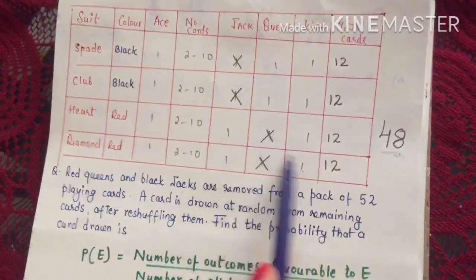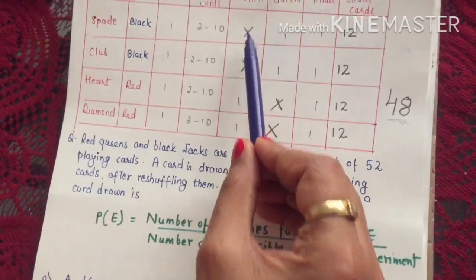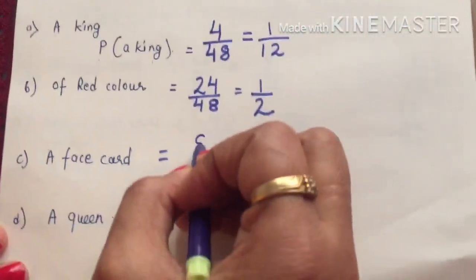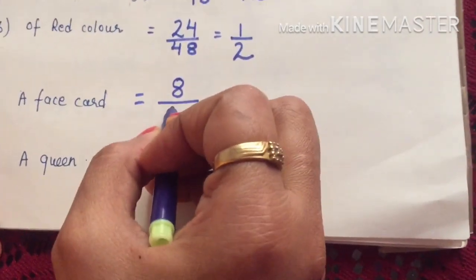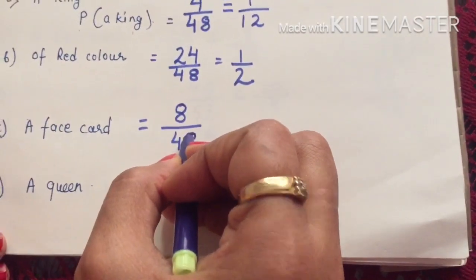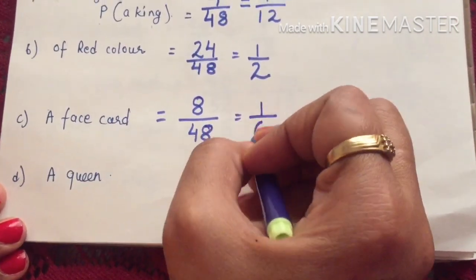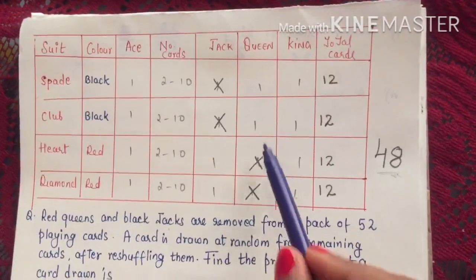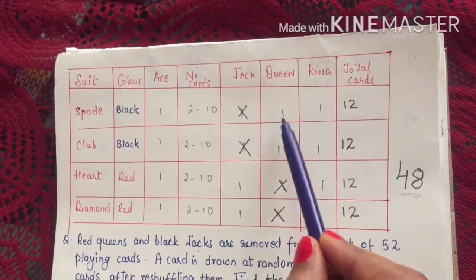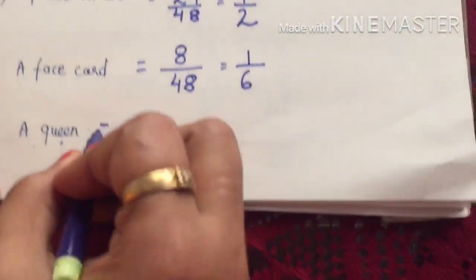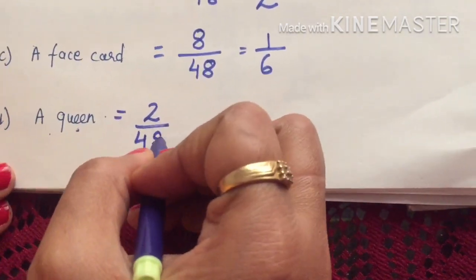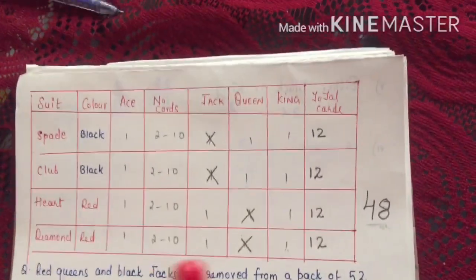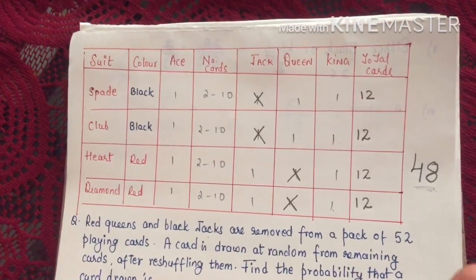Probability of getting a face card: originally there were 12 face cards, but we removed 4 (2 red queens and 2 black jacks), leaving 8 face cards. So probability = 8/48 = 1/6. For a queen specifically: only 2 queens remain (the black ones). So probability of queen = 2/48 = 1/24.